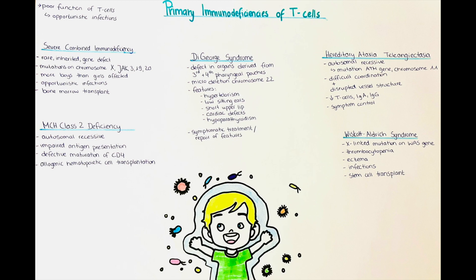Gene therapy can be successful for treatment in certain types of severe combined immunodeficiency. A healthy gene is inserted into a stem cell of the patient through a vector as a carrier. The restored stem cells could then potentially develop into healthy immune cells — specifically T-cells — restoring their function and numbers.